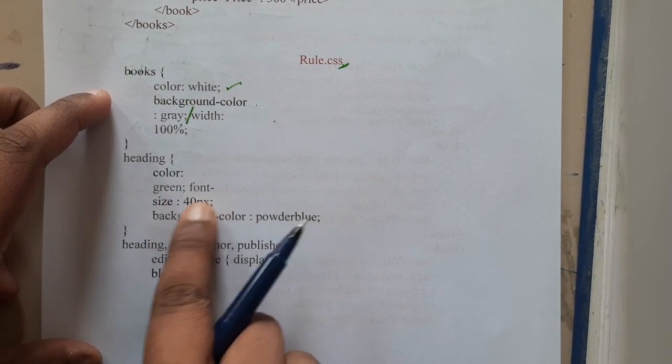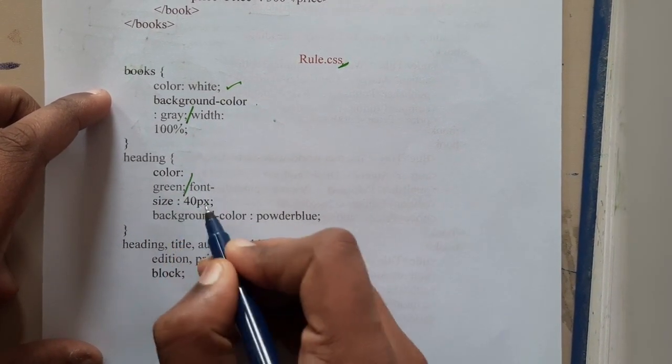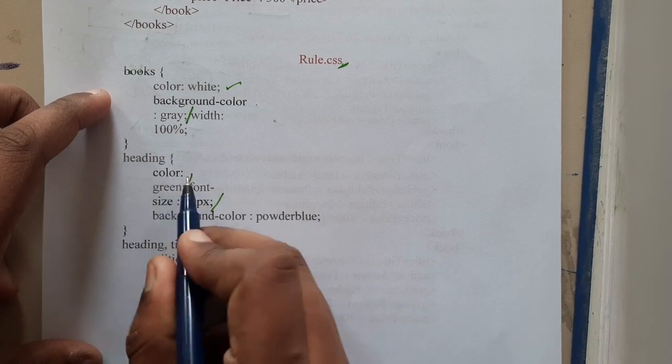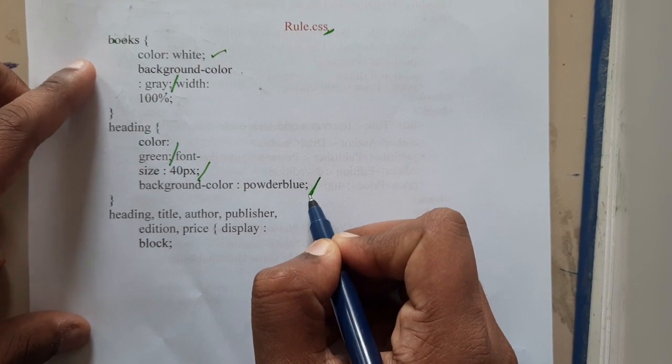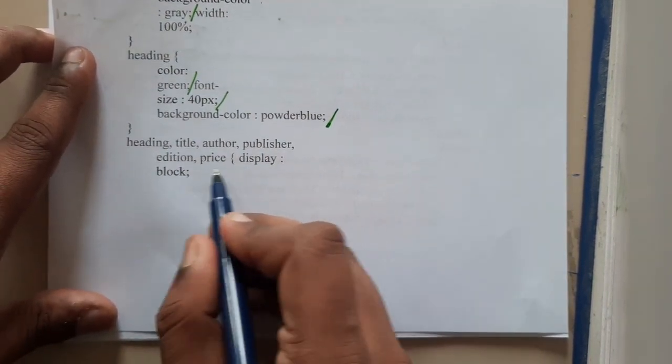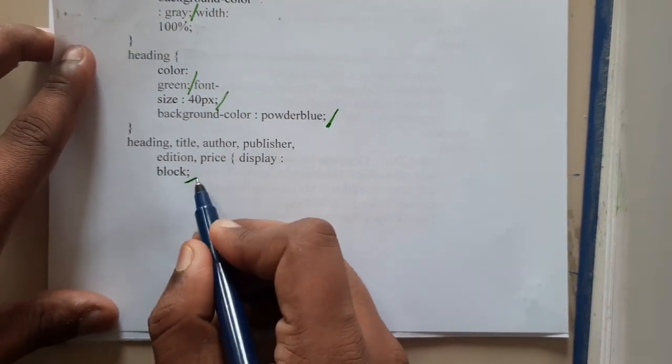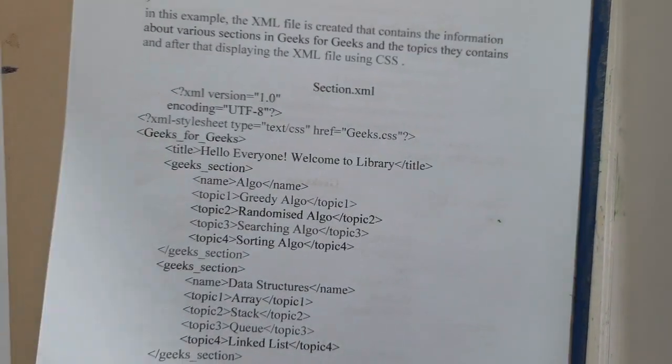For headings you give the color green. For font you give 40 and background color again you deferred it powder blue. Similarly for heading and everything, you are blocking the display.